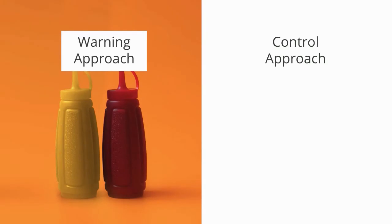If you've been to a restaurant, you might have seen squeeze bottles for ketchup and mustard. When the bottles are opaque, you can't see their contents. It's typical for the bottles to be color-coded — yellow is for mustard and red is for ketchup. There's a visual warning that prevents you from applying the wrong condiment.